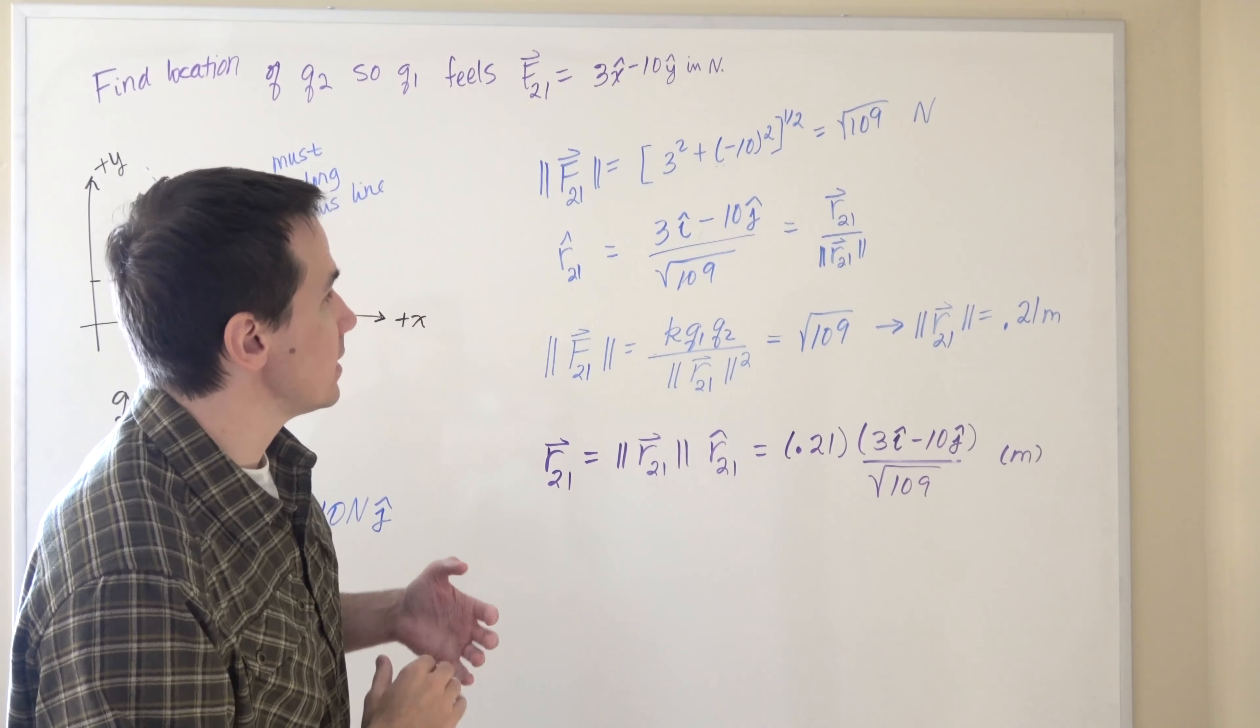So if we find our F21 magnitude simply by doing Pythagorean theorem on our force, we get that it should be the square root of 109 newtons. Now what we can do is that we can use this force magnitude in order to find out our distance between the two particles.